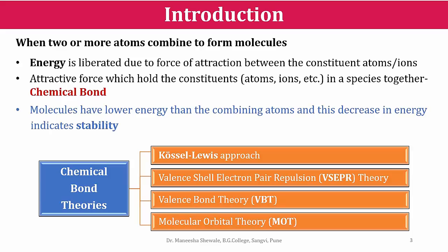The formation of chemical bonds is explained by different theories. They are the causal Lewis approach, the valence shell electron pair repulsion, i.e., the VSEPR theory. The next two theories — the valence bond theory and molecular orbital theory — are based on quantum mechanics.